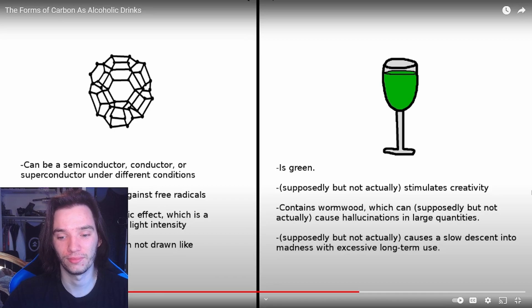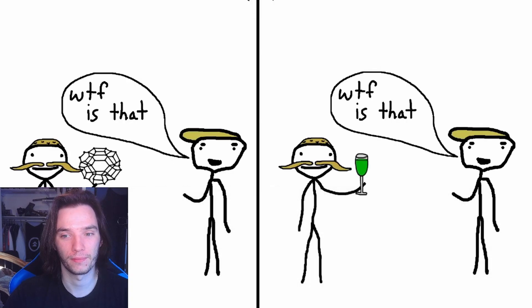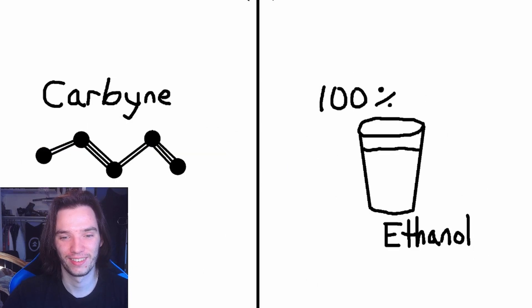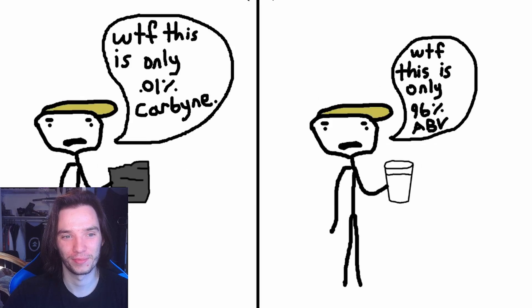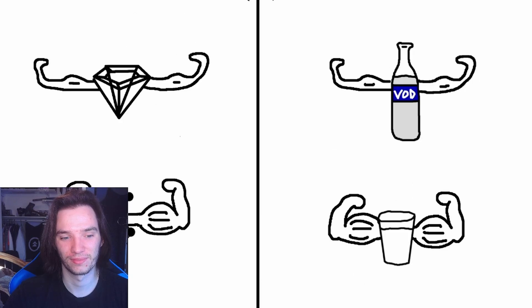Sam continues: Fullerenes have properties not shared by any other form, but despite all the hype, they have little real-world application currently. 'Finally, carbine is like pure alcohol. Despite its simplicity, it's extremely difficult to produce with current methods except in very small amounts. If you were to have a bunch of it, it would be more than twice as strong as diamonds. Hopefully this forced analogy has been at least vaguely informational — anyway, that's all for today, I'm Salmonella, thank you for watching.'